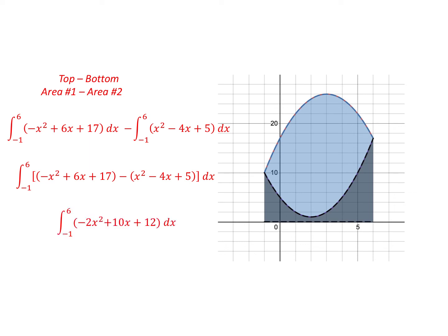And once we combine like terms and simplify, we end up with the integral from minus 1 to 6 of minus 2x squared plus 10x plus 12 dx.